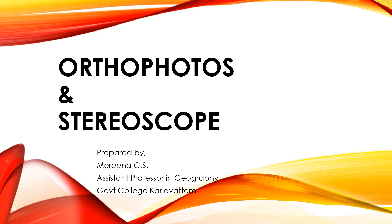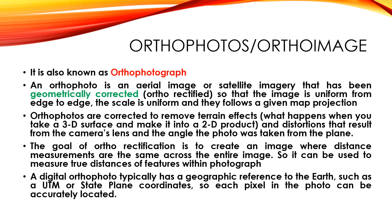In this section we are discussing orthophotos and stereoscopy. An orthophoto, also known as an orthophotograph, is an aerial image or satellite imagery that has been geometrically corrected so that the image is uniform from edge to edge, the scale is uniform, and they follow a given map projection.